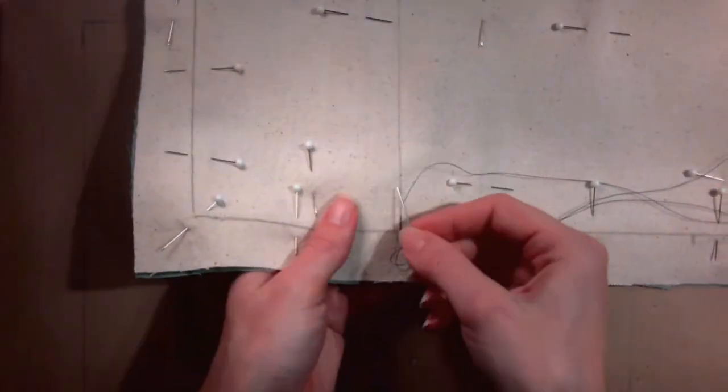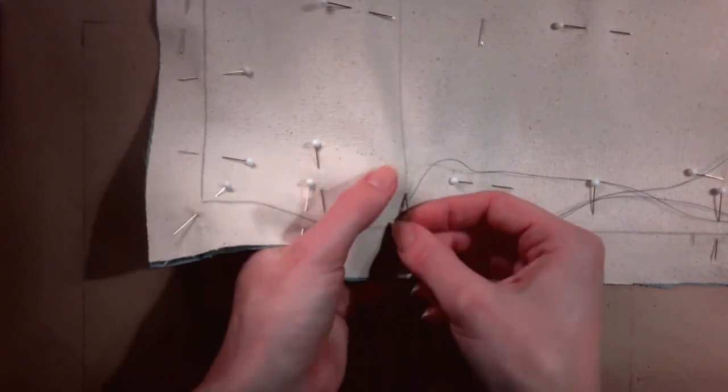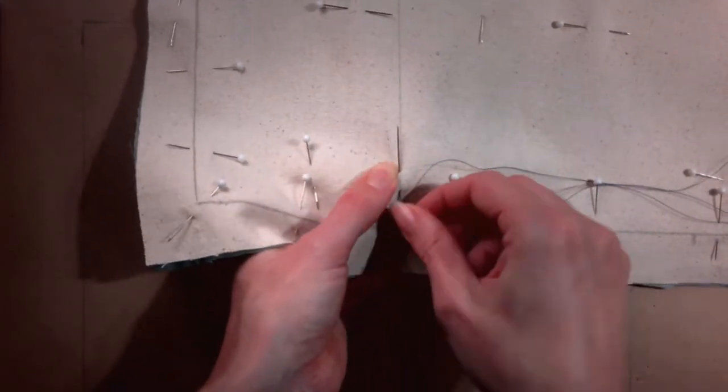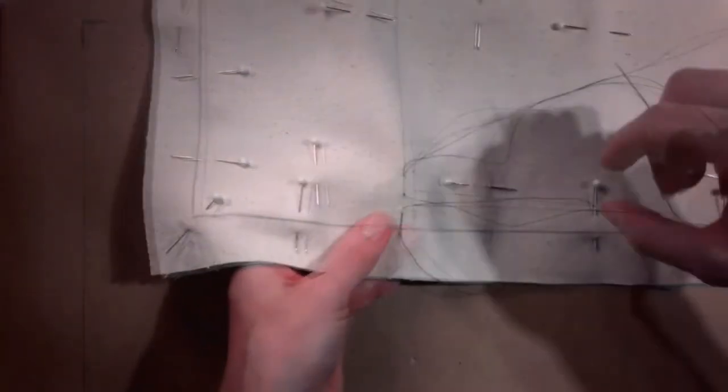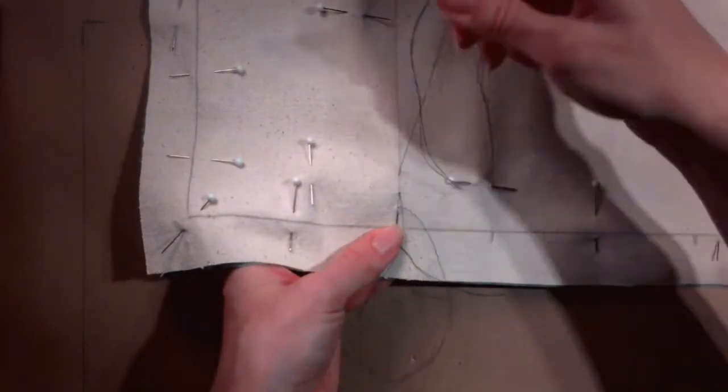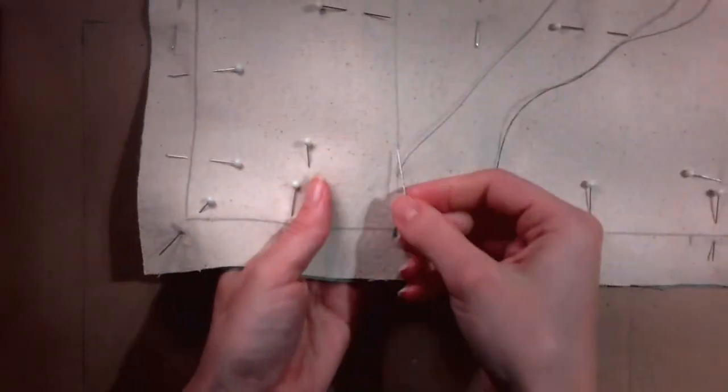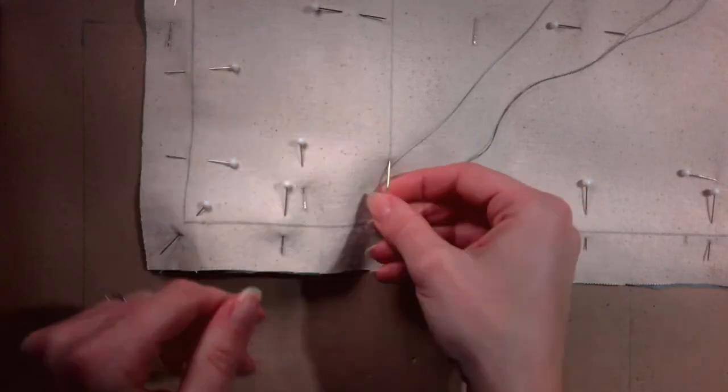Continue forward going down through both layers of fabric, traveling about a half an inch and coming back up, traveling about a half an inch and going back down. This is a running stitch. Continue stitching to the end of the line.